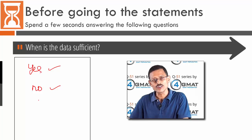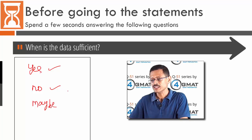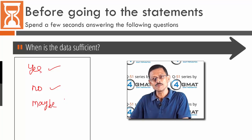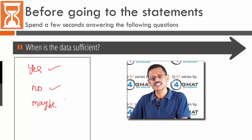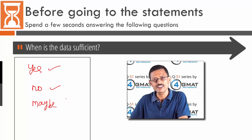When is the data not sufficient? The data is not sufficient when your answer is the equivalent of a maybe — when sometimes m power n is greater than n power n and sometimes it is not. That is not a definitive answer, so in that case the data is not sufficient.